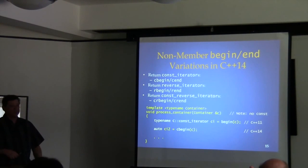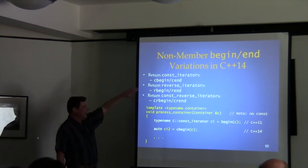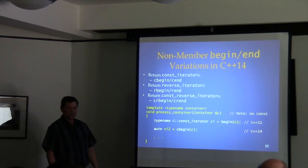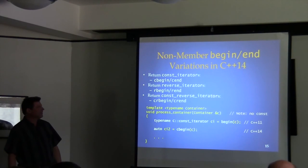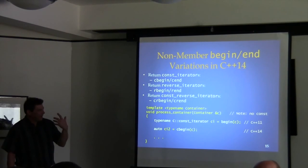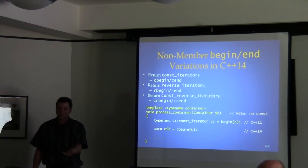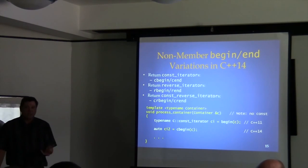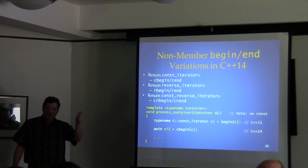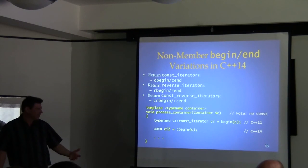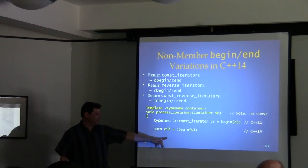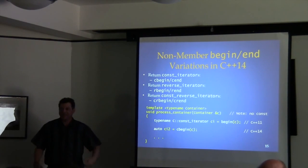C++14 adds natural variations of the non-member functions: cbegin and cend. So now we can say 'cbegin(c)'. If we have a non-const container but want a const_iterator, this keeps us from having to declare 'Container::const_iterator' — we can just use auto and cbegin, and it works.